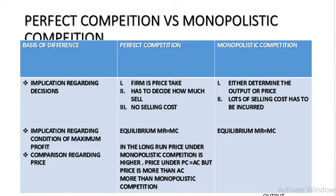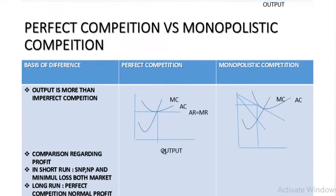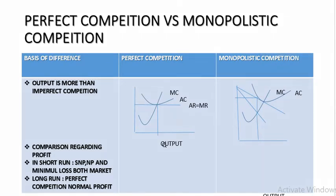The equilibrium condition under both perfect competition and monopolistic competition is the same — equilibrium is arrived where MR equals MC and MC cuts MR from below. Regarding price in the long run: under perfect competition, price equals average cost; under monopolistic competition, price is more than average cost. So price under monopolistic competition is higher than under perfect competition.